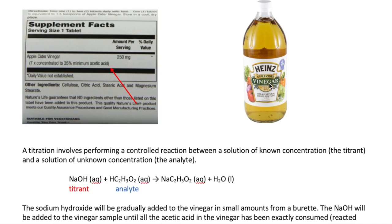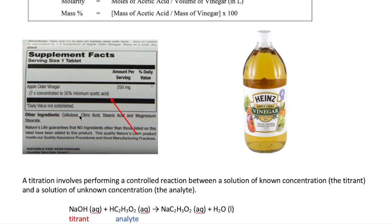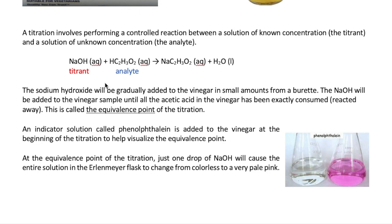Vinegar, like this apple cider vinegar, contains acetic acid. The label tells you that the mass percent of acetic acid is about 3-5%. Of course, that's the minimum — it could be higher. One of the things we're going to do is calculate it using the vinegar preparation we have in the lab, through an acid-base titration.